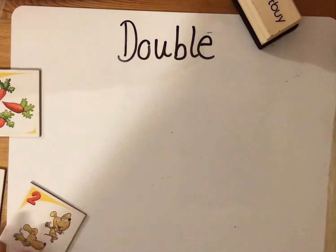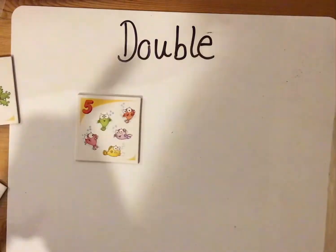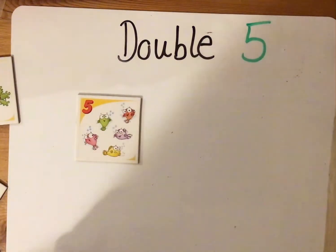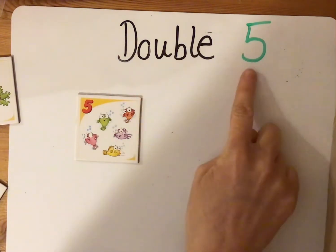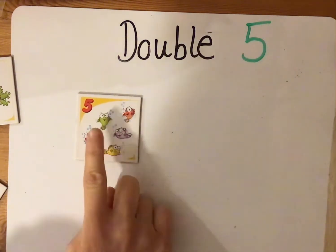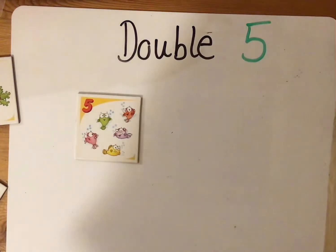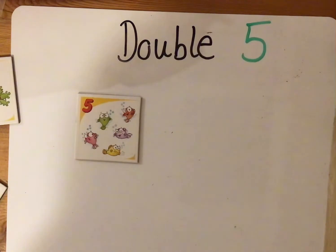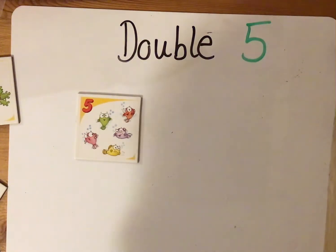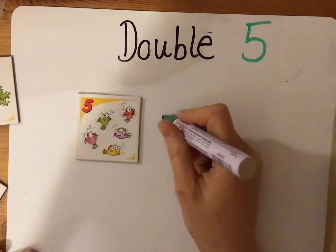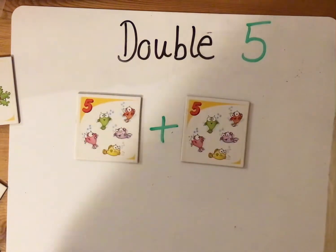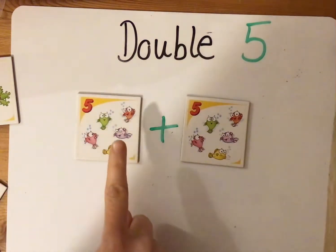I'm going to find the answer to double five. So if I want to double five, what do I need to add to find my answer? Can you tell your adults now — if I want to double five, what do I need to add to five to find the answer? Tell your adults now. If we want to double five we need to add five again, because remember doubling means we add the same number again.